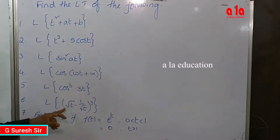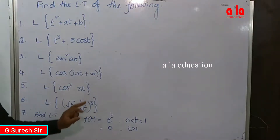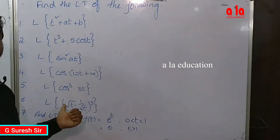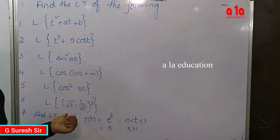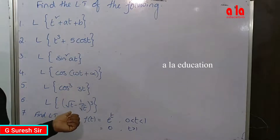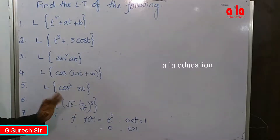For the next one, Laplace transform of (a minus b) whole cube. Expand using the cube formula: a cubed minus b cubed plus 3ab squared minus 3a squared b. Use this formula to simplify this expression before applying the Laplace transform.